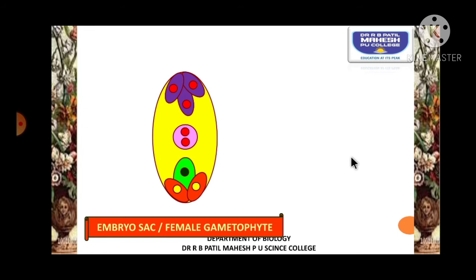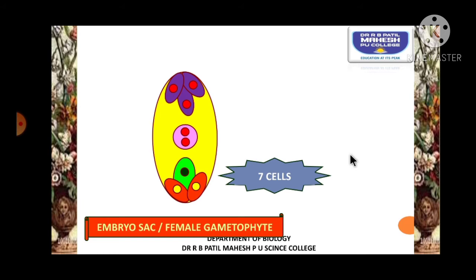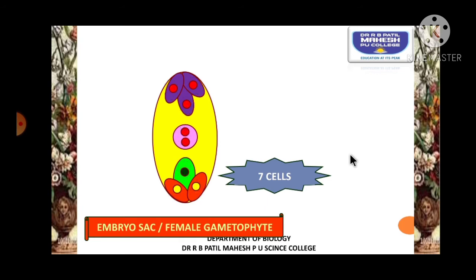Now let us understand the central tissue, that is the embryo sac. It is also called the female gametophyte because it contains a gamete called the egg. This embryo sac is said to be made up of 7 cells but 8 nuclei.